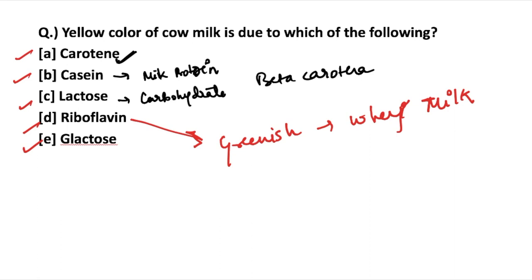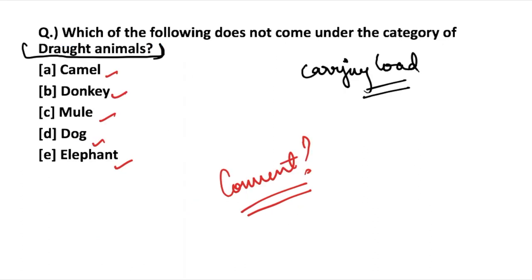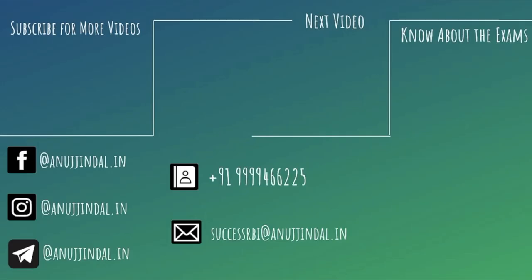To summarize your comment section tasks: which state gave the geographical indication tag to Kadaknath meat, and which animal does not come under the category of draught animals? This is all for the NABARD day 9 video for ARD. Don't forget to subscribe to the channel Anujindal, and share these videos with people preparing for the NABARD examination. Thank you so much for watching.